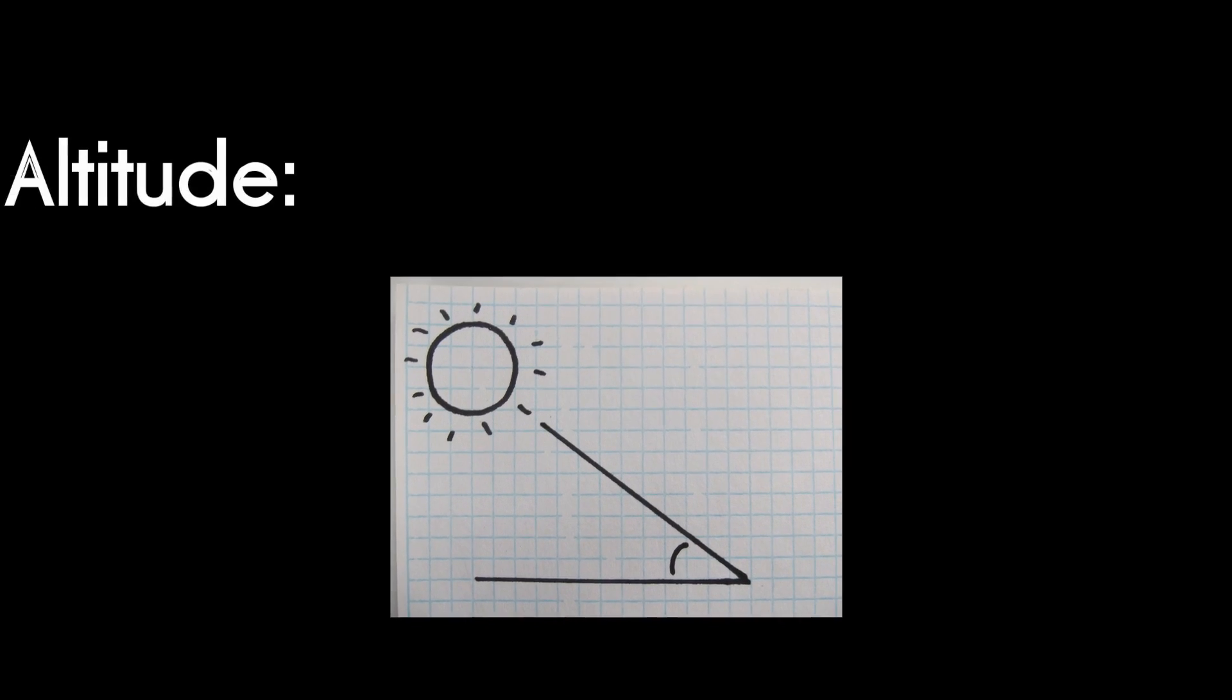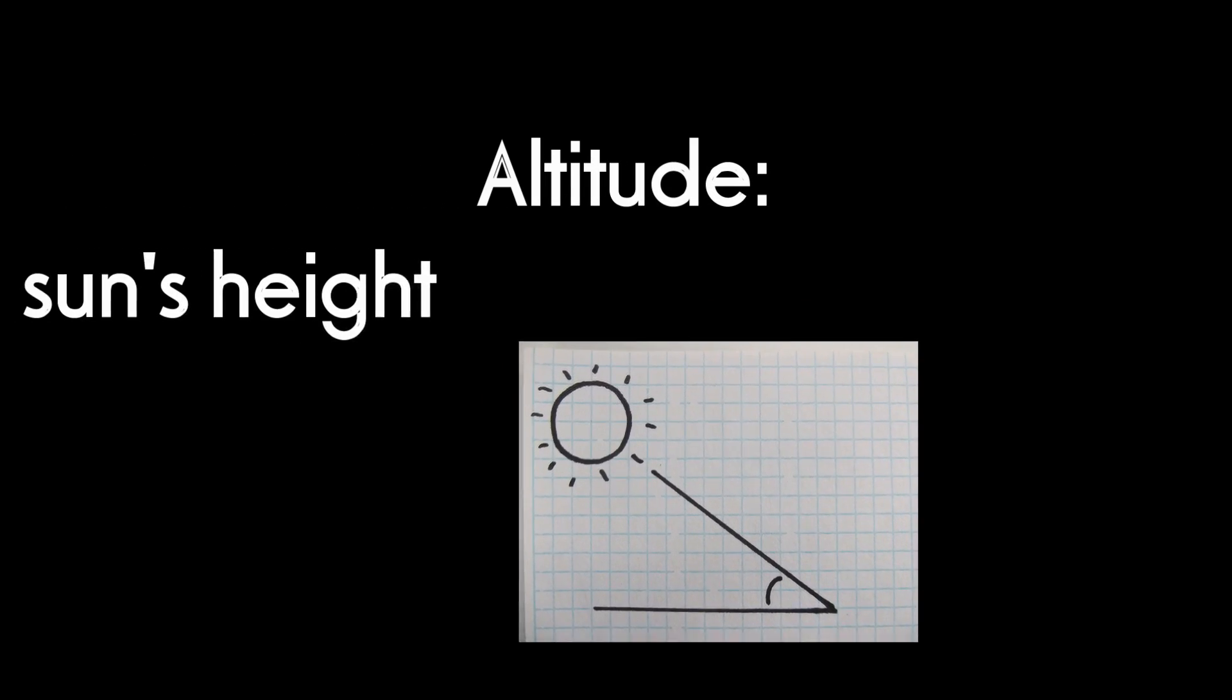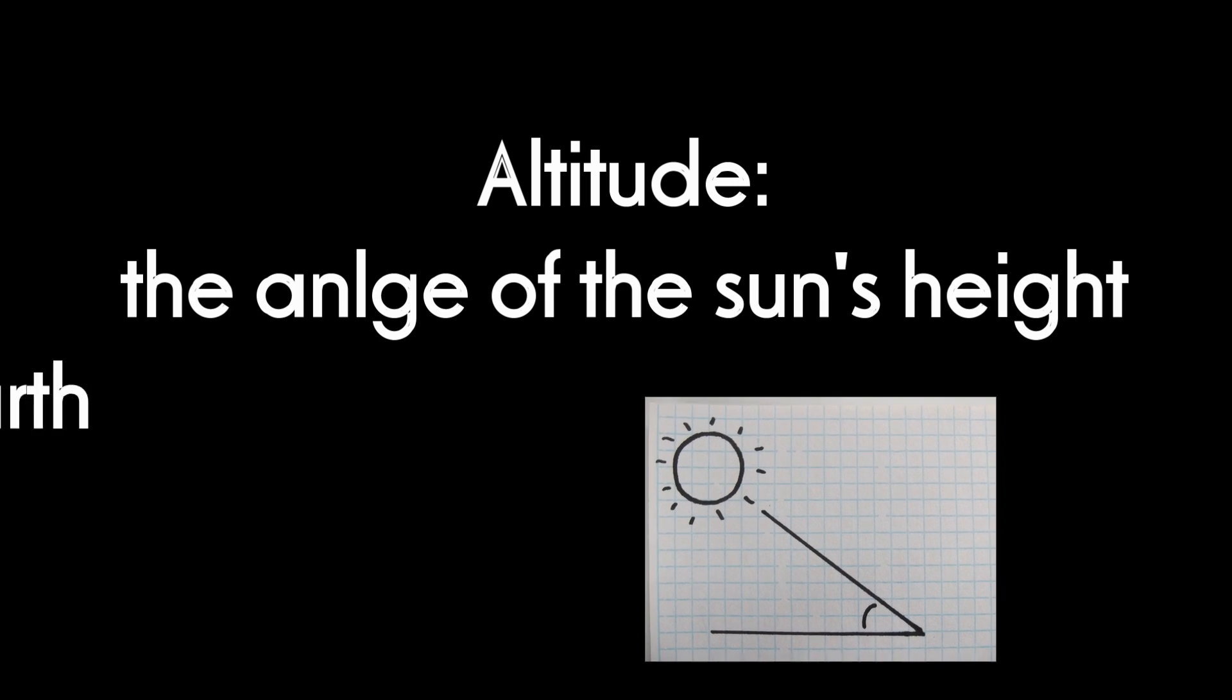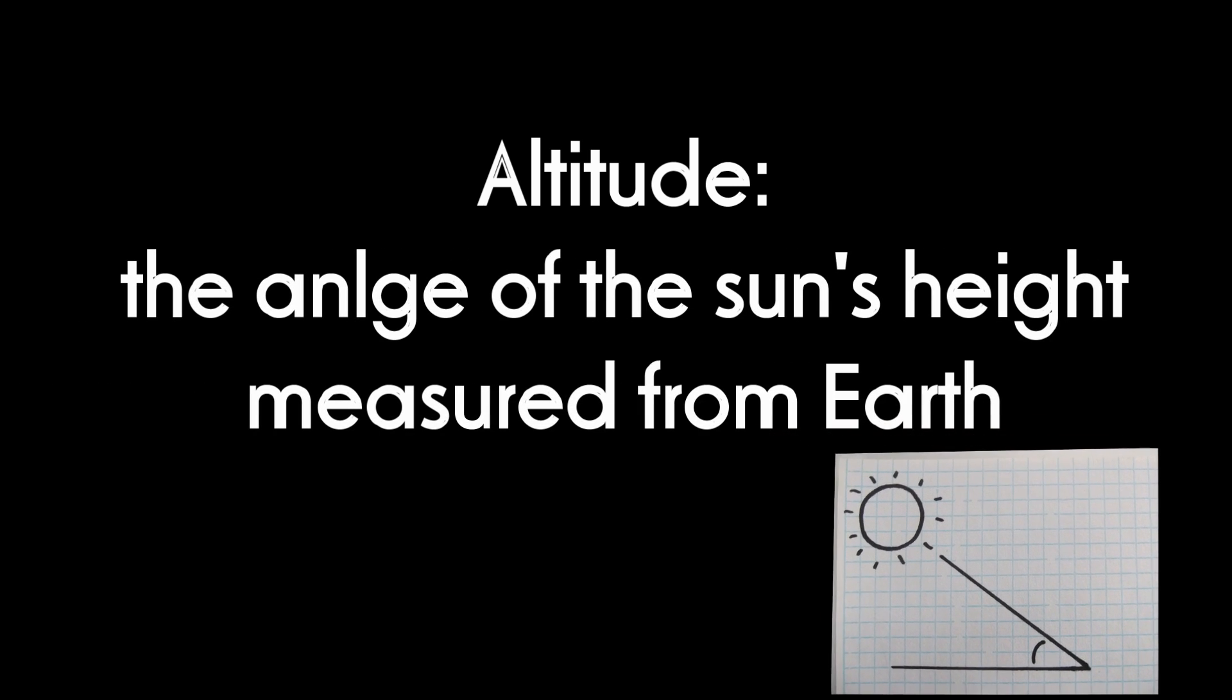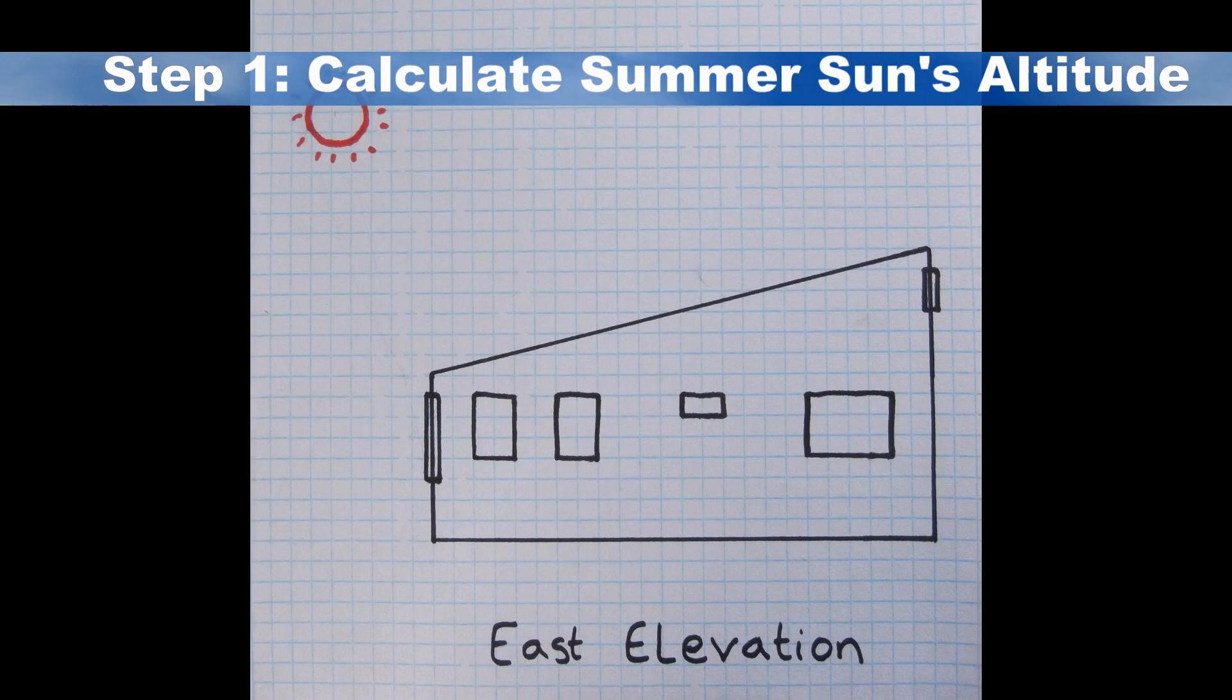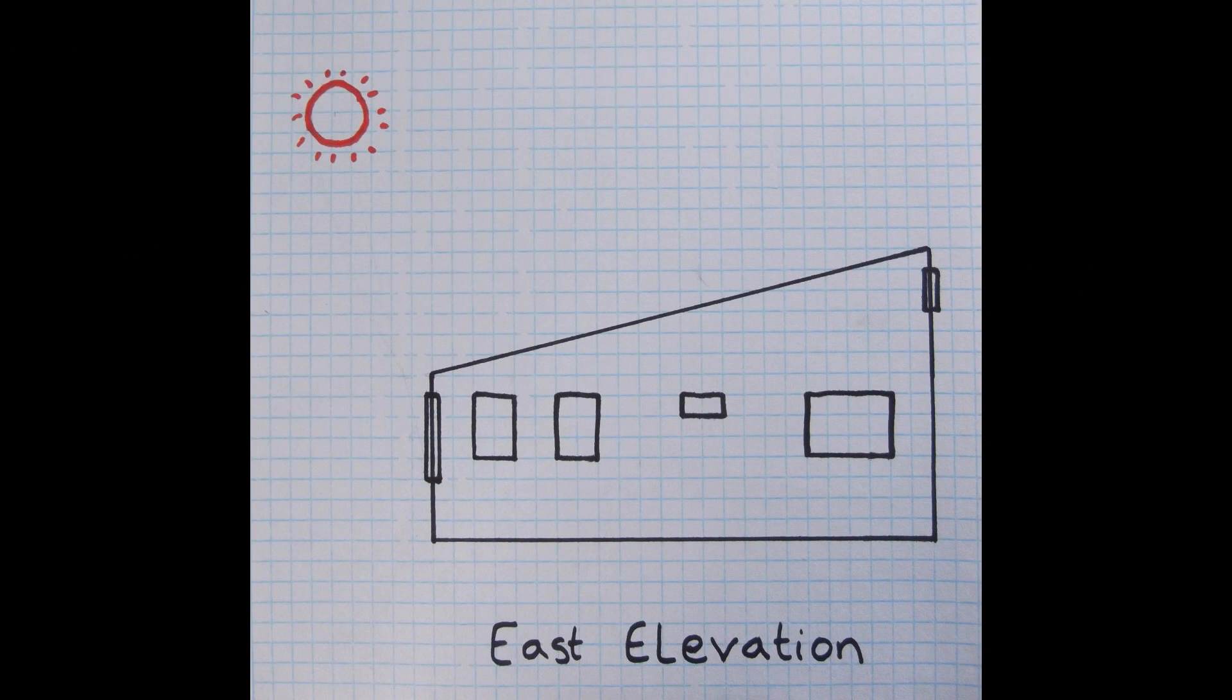The sun's height is an angle called altitude, and it depends on your latitude or where you are on the globe. The sun will reach its highest point in the sky around noon on the summer solstice, June 21st, the longest day of the year.